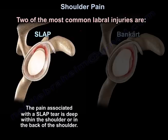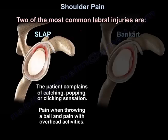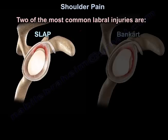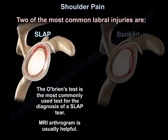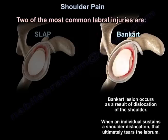The pain from a SLAP tear is deep within the shoulder or in the back of the shoulder. The patient complains of catching, popping, or clicking sensation, pain when throwing a ball, and pain with overhead activities. The O'Brien test is the most commonly used test for diagnosis. MRI arthrogram is usually helpful. The Bankart lesion occurs as a result of dislocation of the shoulder, when an individual sustains a shoulder dislocation that ultimately tears the labrum.